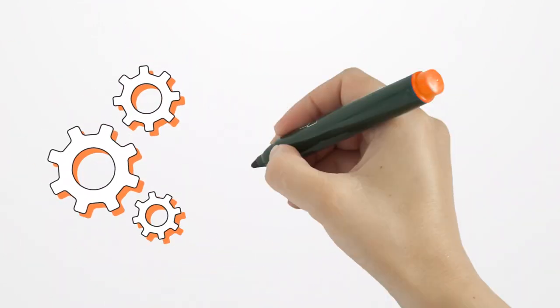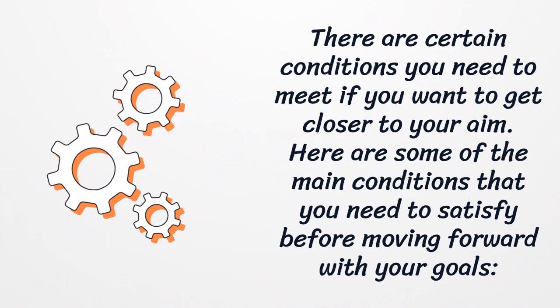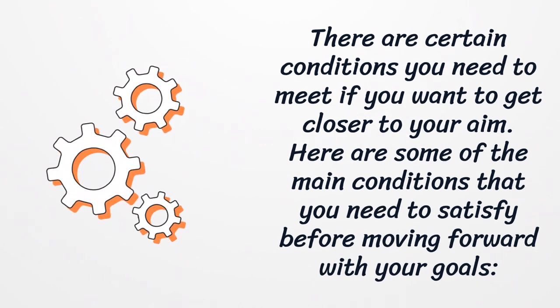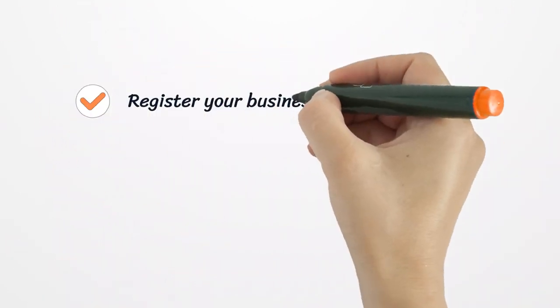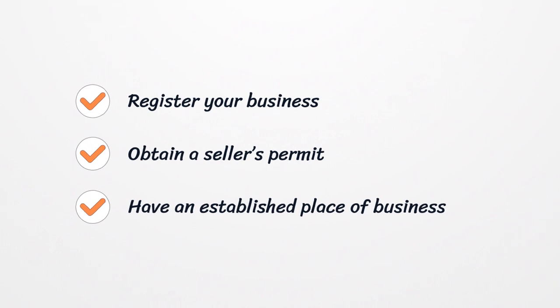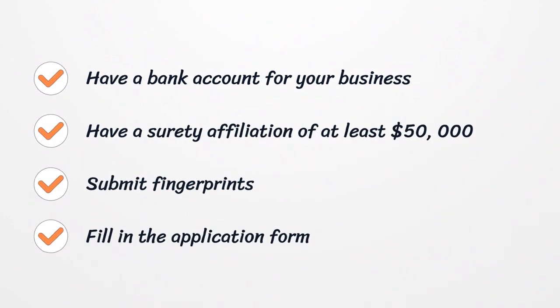Requirements. There are certain conditions you need to meet if you want to get closer to your aim. Here are some of the main conditions you need to satisfy before moving forward: register your business, have an established place of business, obtain a seller's permit, have a bank account for your business, have a surety affiliation of at least $50,000, submit fingerprints, and fill in the application form.